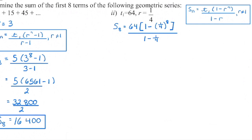In the next example, my common ratio is 1 quarter, so I'm going to use this formula. 1 minus 1 quarter is going to give me 3 quarters, so I still end up with a positive denominator. It's not the end of the world if you use the other formula — you'll just have to move that negative up at the end and work through it. So we have eight terms, we're going to substitute into that formula, and then when we go to simplify, I'll begin with the bracket, starting with the exponent piece.